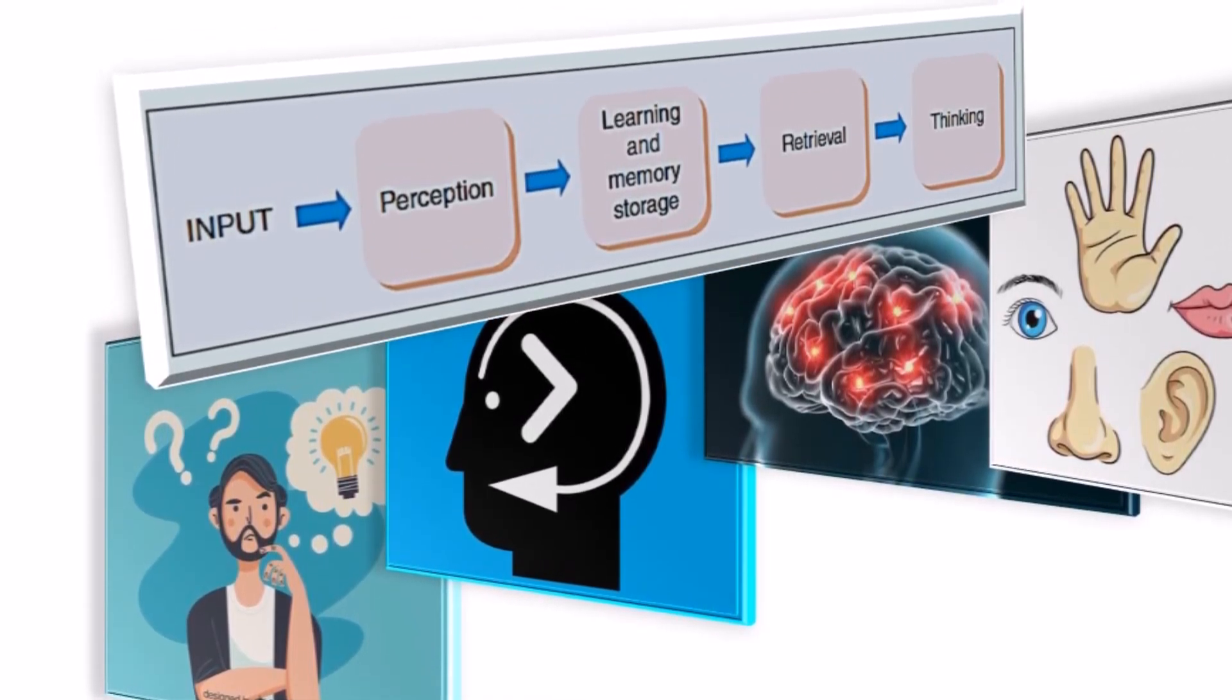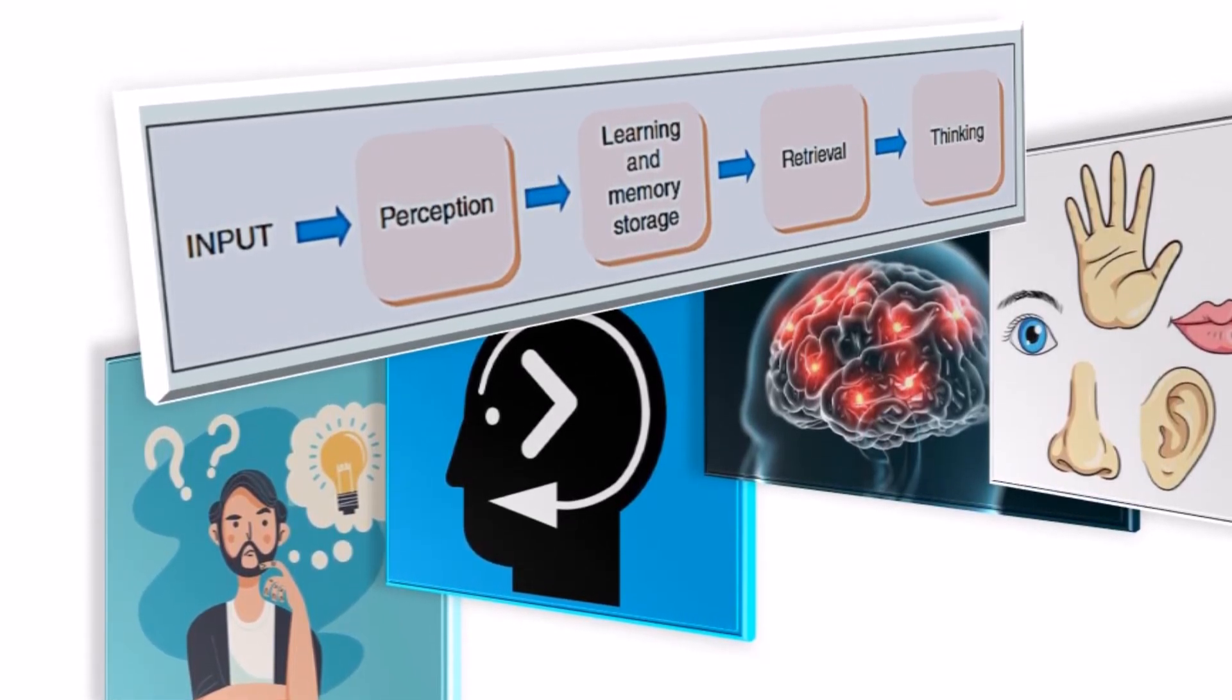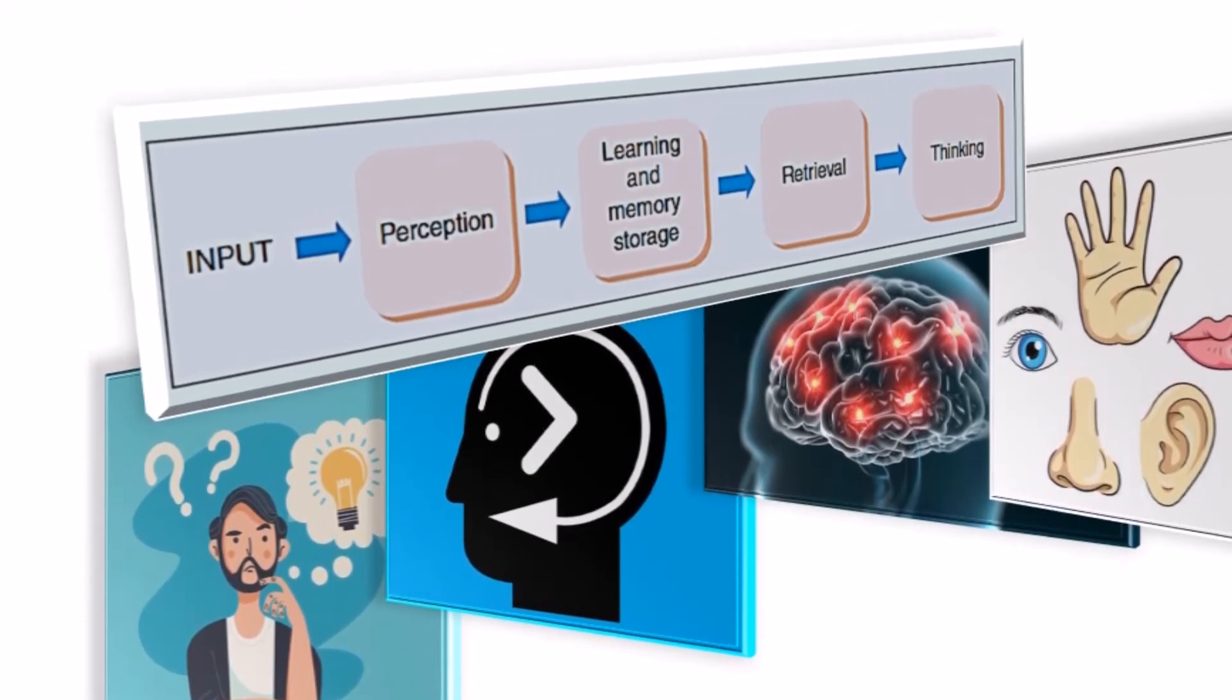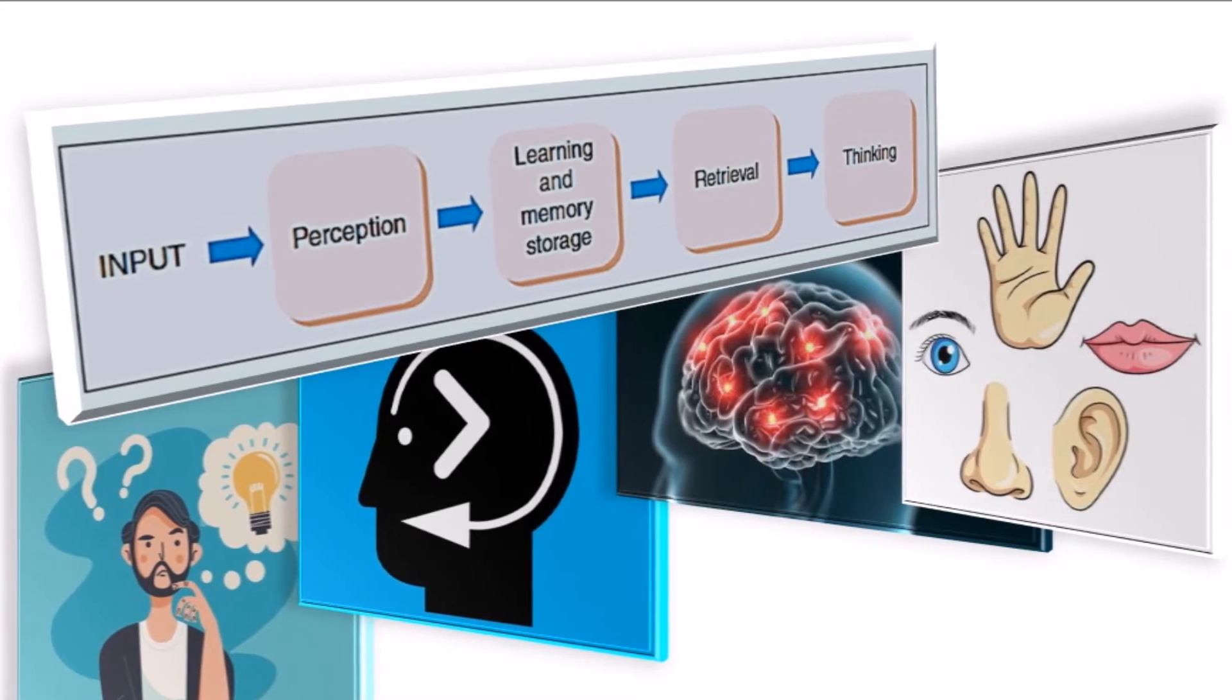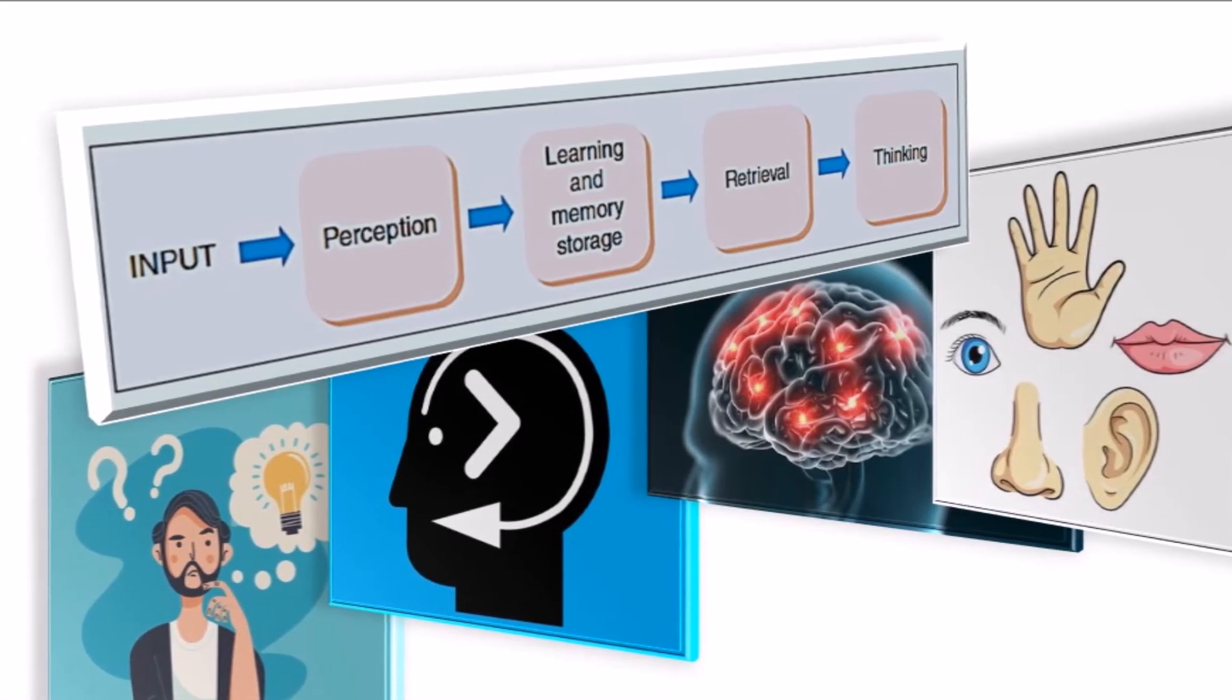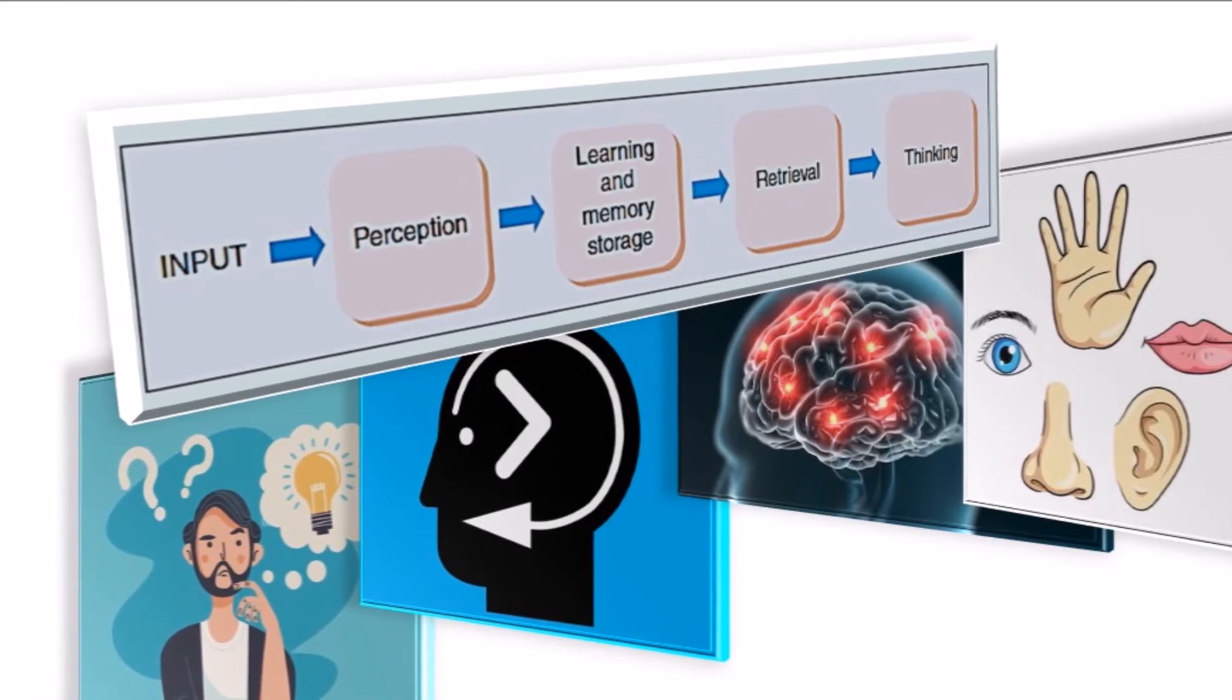For example, there is no exact point at which perception ceases and memory storage begins, because the process of perception brings about learning and memory storage, and thus in a sense these processes are continuous. In fact, all of the stages of cognition shown in the diagram overlap and interact with one another, but a diagram showing all of these complex interactions would be far too confusing, and in any case a lot of the interactions would be speculative.